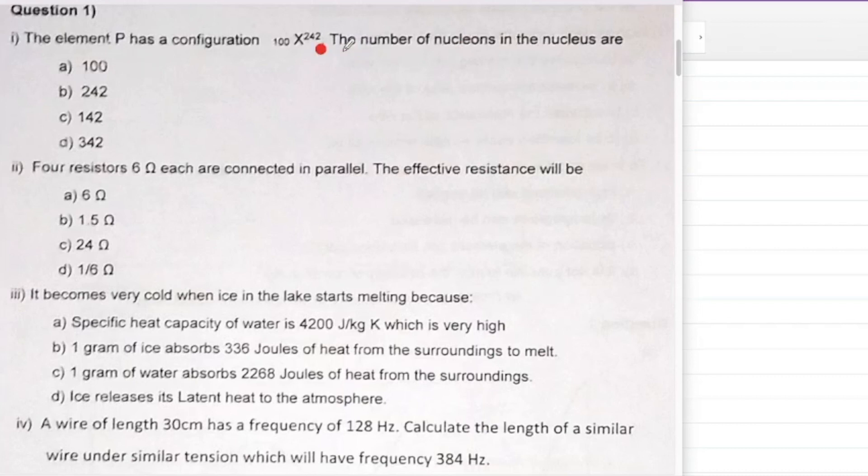Starting with section A which is of 10 marks. As you know it contains 10 MCQ questions. Element P has configuration - the number of nucleons in the nucleus, how many nucleons will be there? 242.